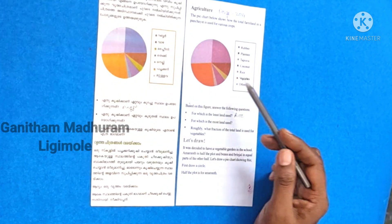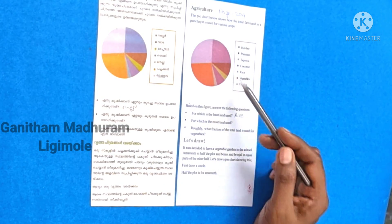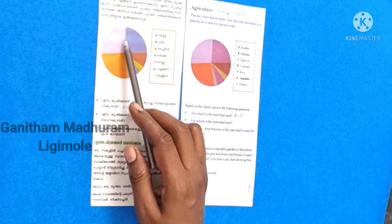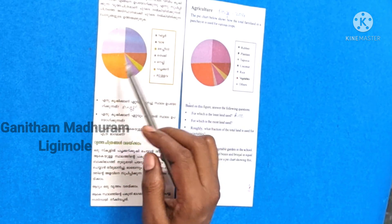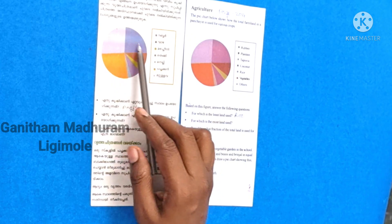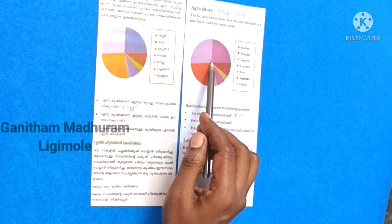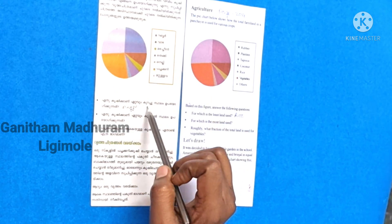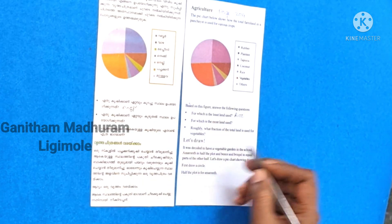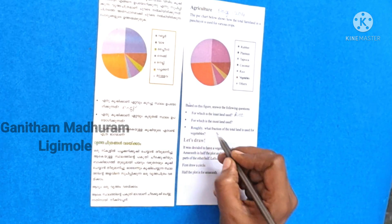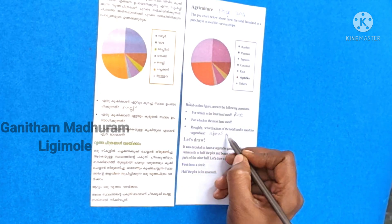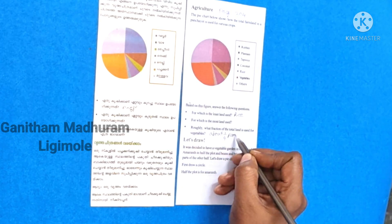Roughly what fraction of the total land is used for vegetables? If we look at this, we have to look at this point. 1 by 4 parts are 1 by 4 parts. About 1 by 4 parts.